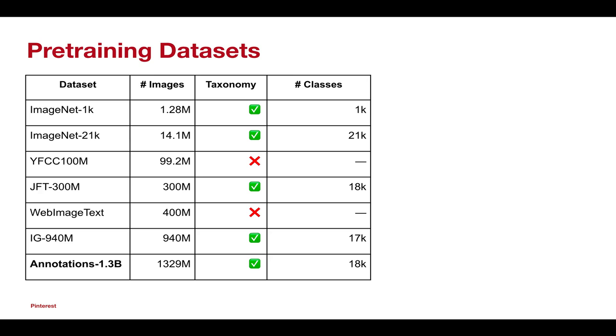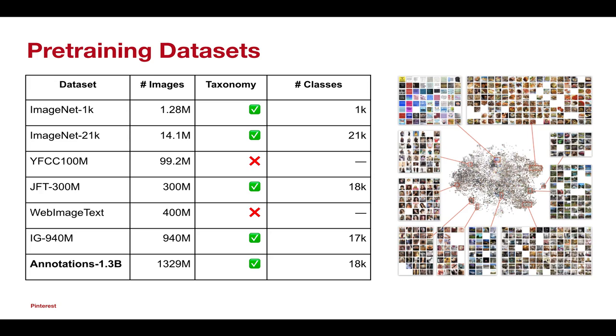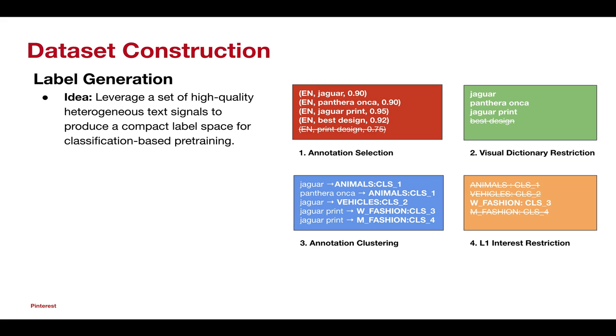In this work, we develop a novel dataset construction method that results in a new large-scale dataset known as Annotations 1.3 Billion. This dataset is two orders of magnitude larger than the standard ImageNet-21k dataset and offers unique advantages for the unified visual embedding. We believe this method will be of interest to other researchers in the development of large-scale datasets.